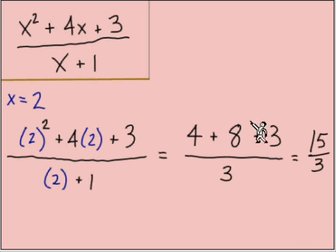The denominator is just a 2 plus 1, 3. So let's add up the numerator, 4 plus 8 plus 3 is 15. We end up with 15 thirds, which we can divide evenly or simplify, equals the whole number 5.